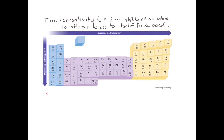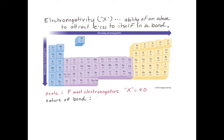Here are values of electronegativity for all the elements in the periodic table. The scale is based upon the element fluorine. Fluorine is the most electronegative element — it does the best job of attracting electrons to itself in a bonding situation. We assign the value of 4.0 to fluorine, and everything else is relative to that and smaller than 4. The nature of the bond is predicted by the difference in electronegativity of the two atoms engaged in the bond. Ionic bonds form when that difference in electronegativity is bigger than 1.8 — we get a full exchange of electrons and an ionic bond.